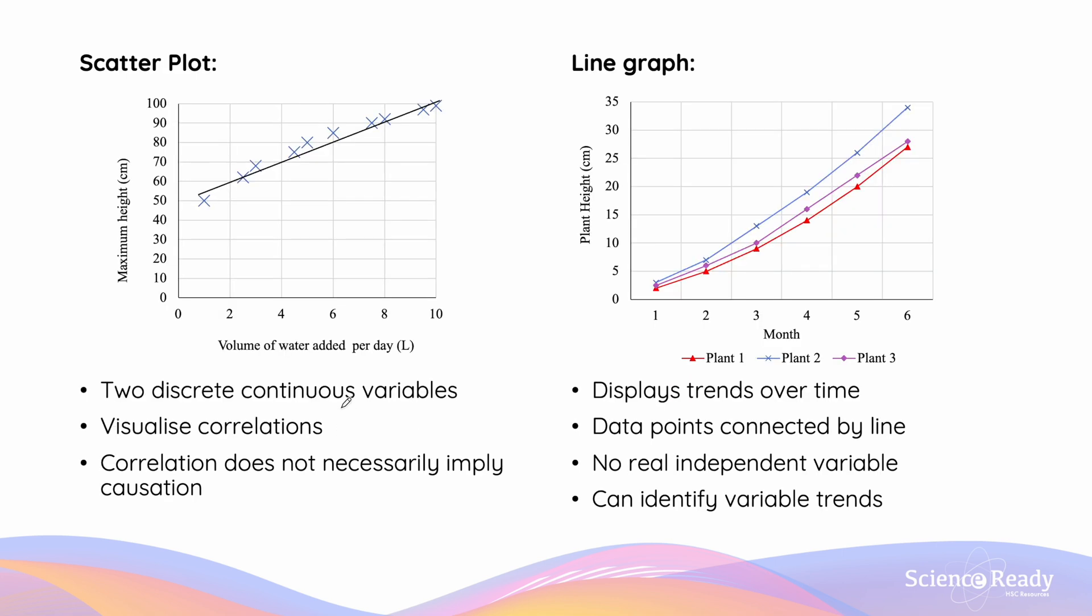Scatter plots are used when there are two discrete continuous variables, and allow us to visualize correlations. These can be summarized using the line of best fit. However, these correlations do not necessarily imply causation, in case there is an extraneous variable that has not been accounted for.